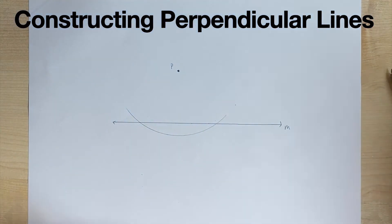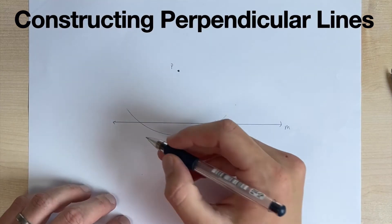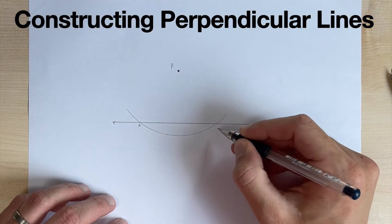Okay. So now we have our arc and we have a couple of intersections here. Let's label these intersections A and B.